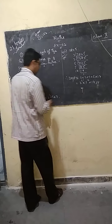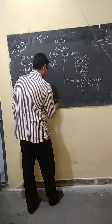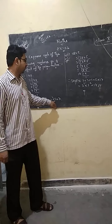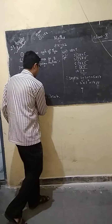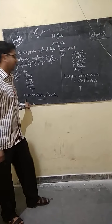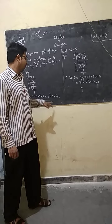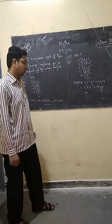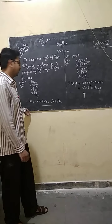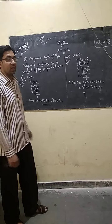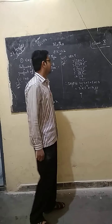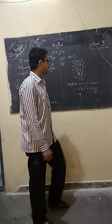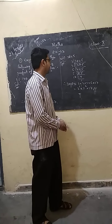We can write the factors as 2 into 2, which means 2 squared, into 5 into 7. So in other words, the factors of 140 are 2 squared into 5 into 7. These are the factors of 140.